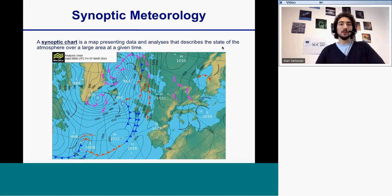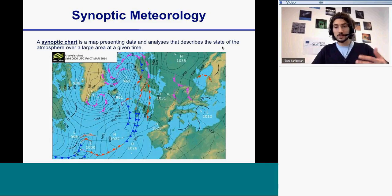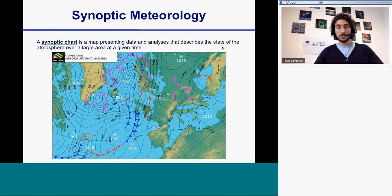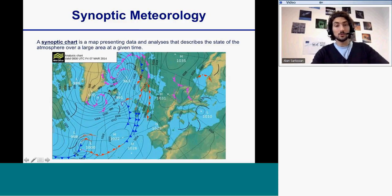I will explain what a synoptic chart is — a map presenting meteorological data for a large area at a given time. I will explain what is a cold front, a warm front, and an occluded front.